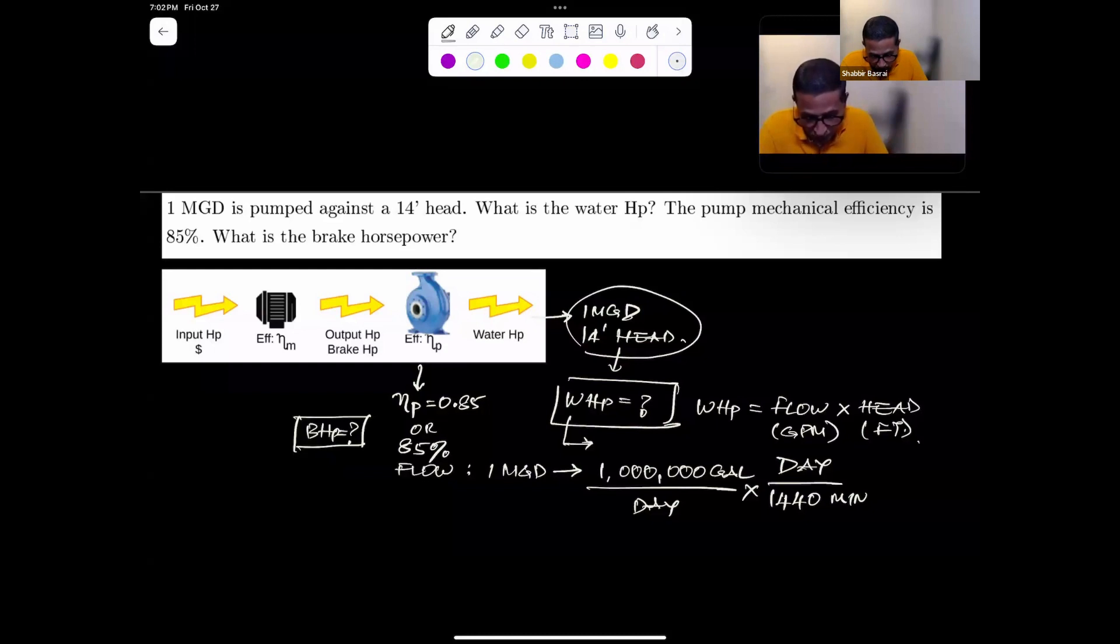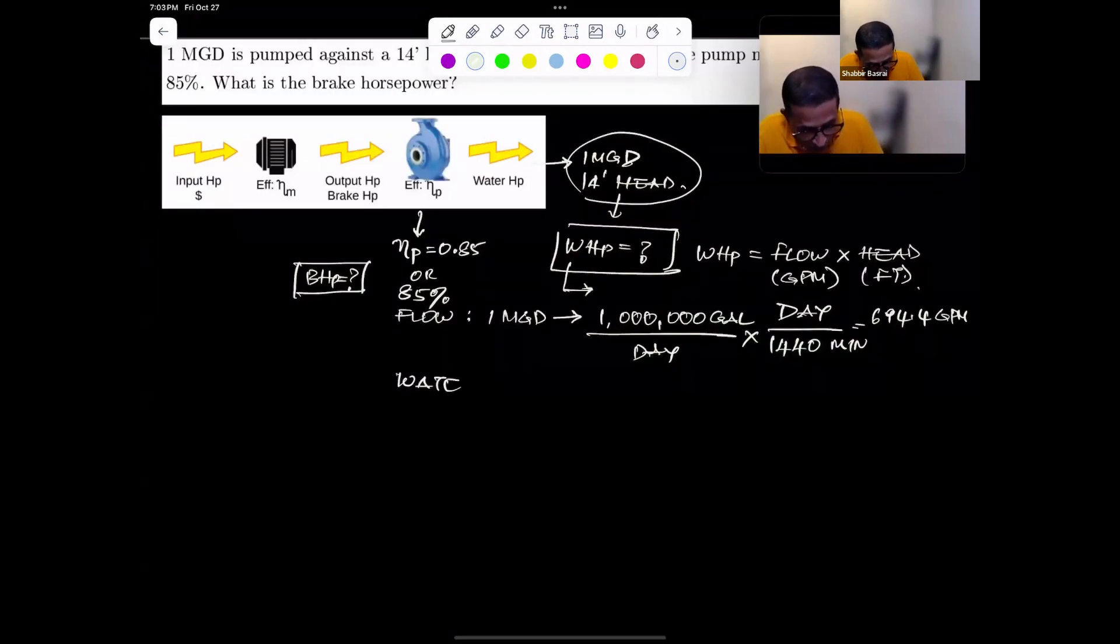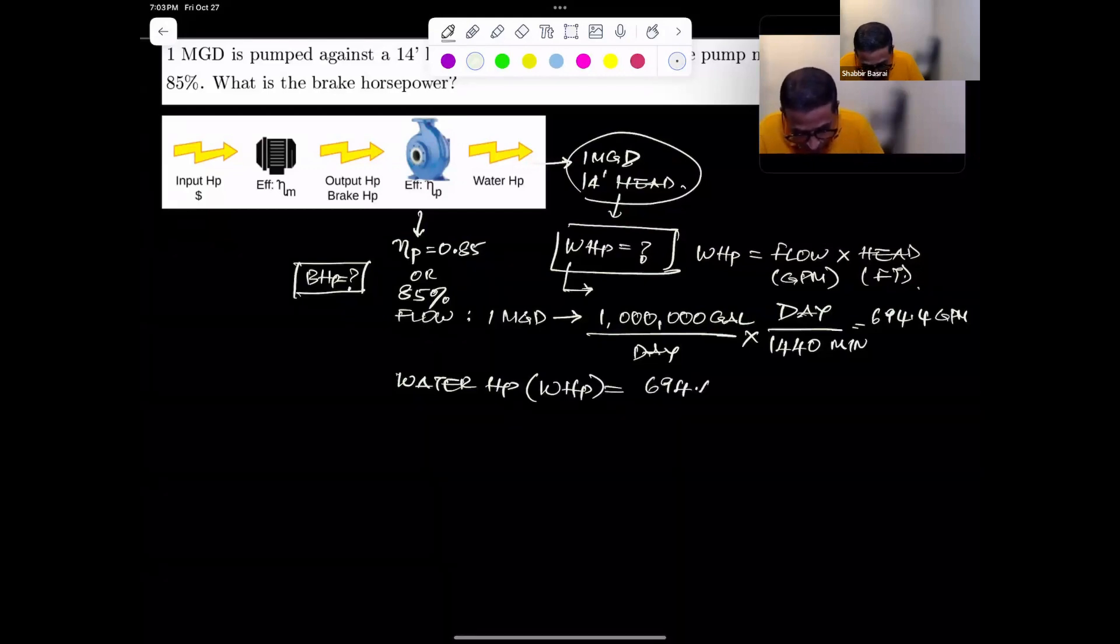The head is given as 14 feet, so I don't need to do that. My water horsepower is equal to 694.4 times 14. What is the unit here? This is going to be in GPM feet.